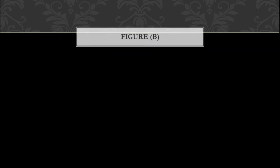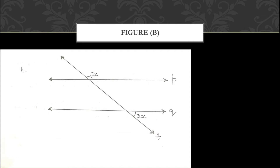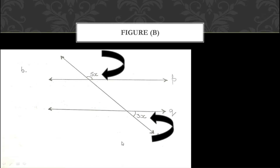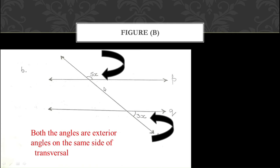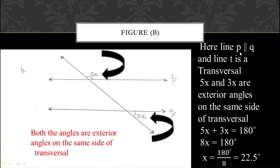Now let us move on to part B. In figure B you can see parallel lines P and Q and transversal T. The two angles given are 5X and 3X. These are in the exterior region on the same side of the transversal — they are exterior angles on the same side of the transversal. According to the property of parallel lines, the sum of such exterior angles is 180 degrees.